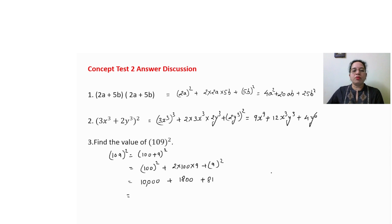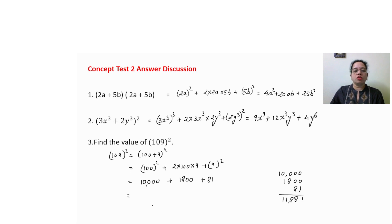If you have any doubt adding directly, it is better to write down the numbers in a rough column and add them to avoid mistakes. So the answer is 11,881.